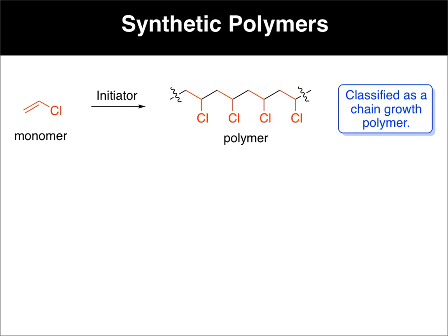So in this case, here we have vinyl fluoride, and upon polymerization, you can see that we have many of these repeating units. The alkene goes away, but I've highlighted in red the different vinyl chloride units that made up the polymer. These squiggly lines just say that this repeats and continues on the left and on the right.